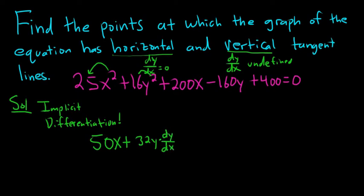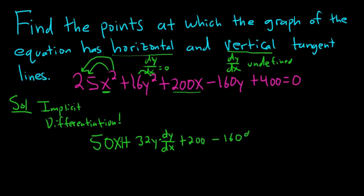It's the chain rule. We used it here too because we did 2 times 25 and then multiplied by the derivative of x — x is the inside function, but that's just 1, so there's really an invisible 1 here which I didn't write — plus 200, that's the derivative of 200x, minus 160. Then we have a y so we write dy/dx, and the derivative of 400 is 0, so all of this equals 0.